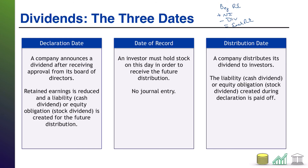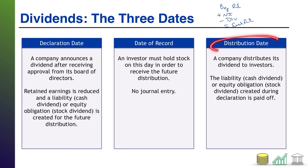That 'stockholders of record as of this date' refers to the date of record. If you own the stock that day, you're on the list to get the dividend; if you don't, you're not. But this is not an accounting issue — it's just a logistical issue — so there is no journal entry on that day.